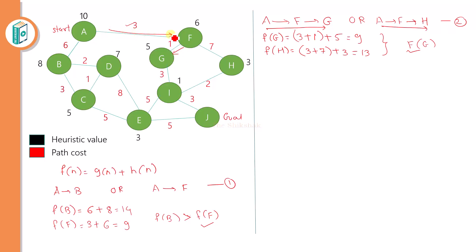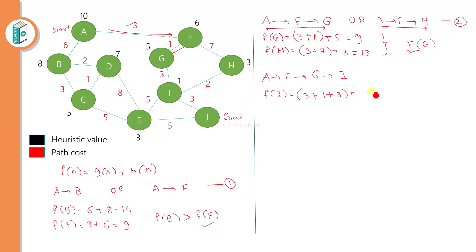From G, there is only one path available, so we have no option — we must follow this way toward I. For F(I): G(N) from A to F is 3, plus F to G is 1, plus G to I is 3, plus heuristic value of I which is 1, equals 8. So F(I) = 8. We proceed along the path A to F to G to I.